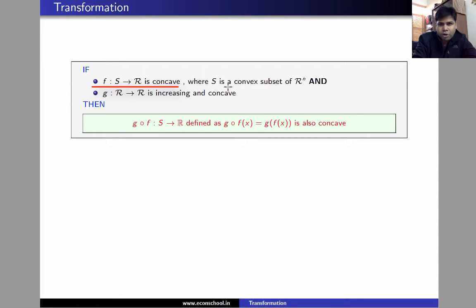where S is a convex subset of R^n, and G is an increasing and concave function defined on the real line, then the function G ∘ F defined as G ∘ F(x) = G(F(x)) is also concave.